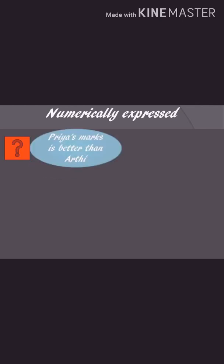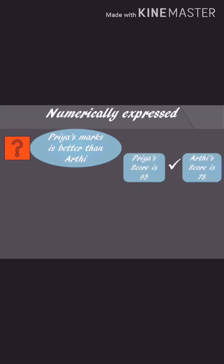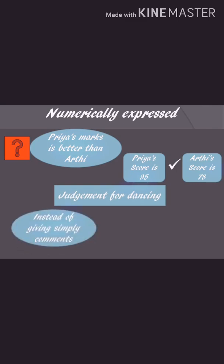Statistics should be numerically expressed. Instead of a statement like 'Priya's marks are better than Aarti's,' it is better to have the marks of both numerically to analyze statistically. Similarly, in a dancing competition, instead of judgments like 'her stage presence is very good, expressions are awesome, postures are perfect,' it is better to announce numerical marks for each criterion.